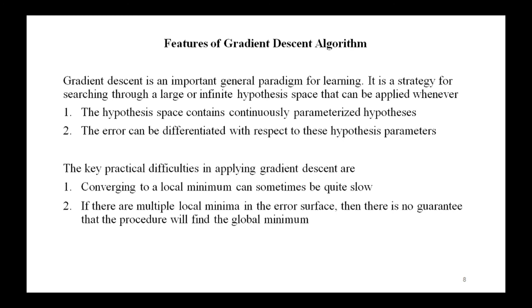Gradient descent is an important general paradigm for learning — a strategy for searching through a large or infinite hypothesis space. It can be applied when: (1) the hypothesis space contains continuously parameterized hypotheses, and (2) the error can be differentiated with respect to these hypothesis parameters. Key practical difficulties include: first, converging to a local minimum can sometimes be quite slow; second, if there are multiple local minima in the error surface, there is no guarantee the procedure will find the global minimum.